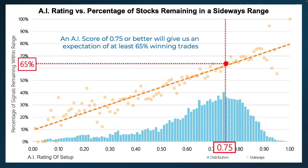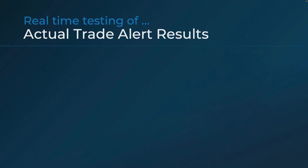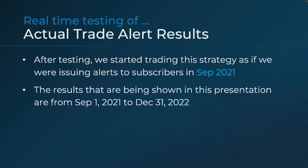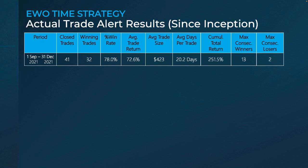Now let's talk about the actual trading results. We finished testing and started tracking results in September of 2021. As at the time of this recording, we've been trading for four months. In summary, the results were pretty outstanding. We had 41 trades completed in this period, 32 of which were winners, for a win ratio of 78%.